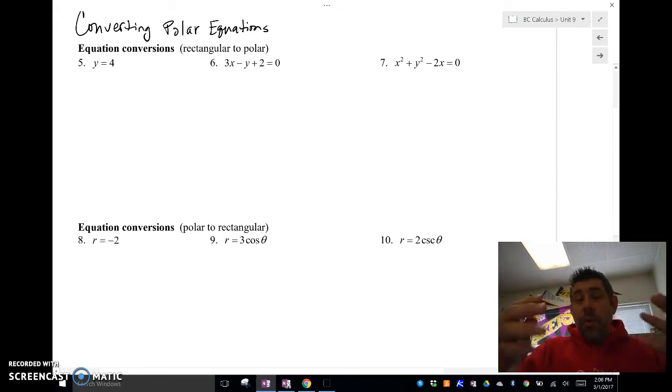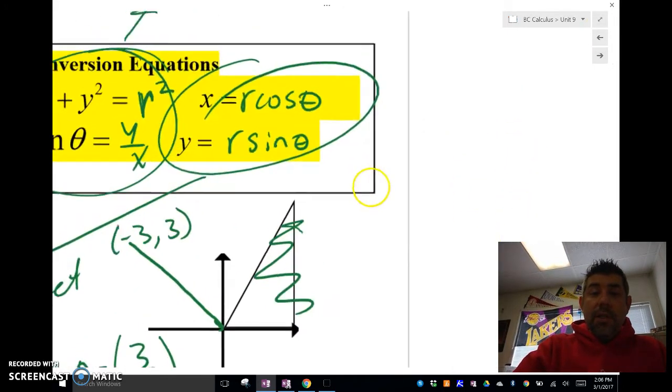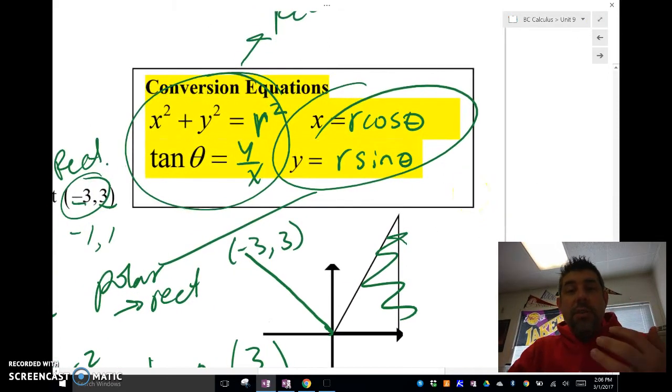What we're going to be doing here is converting polar equations. Just to remember, in the previous video we talked about these conversion equations. We've got x² + y² = r², tan(θ) = y/x, x = r cos(θ), and y = r sin(θ). You're going to need to remember those when we're doing these conversions from rectangular to polar and polar to rectangular.